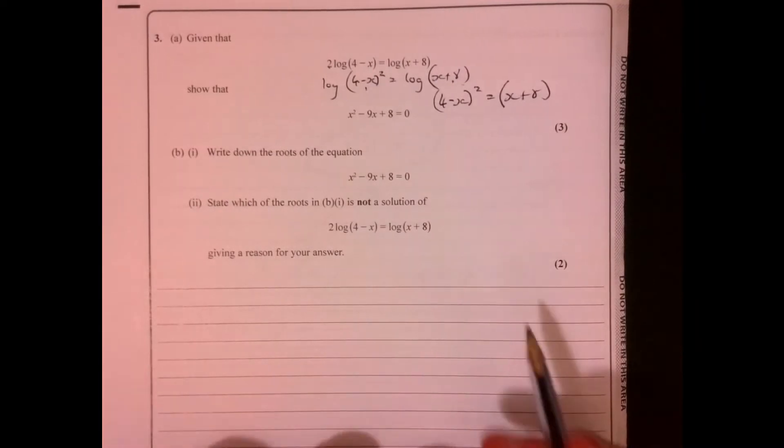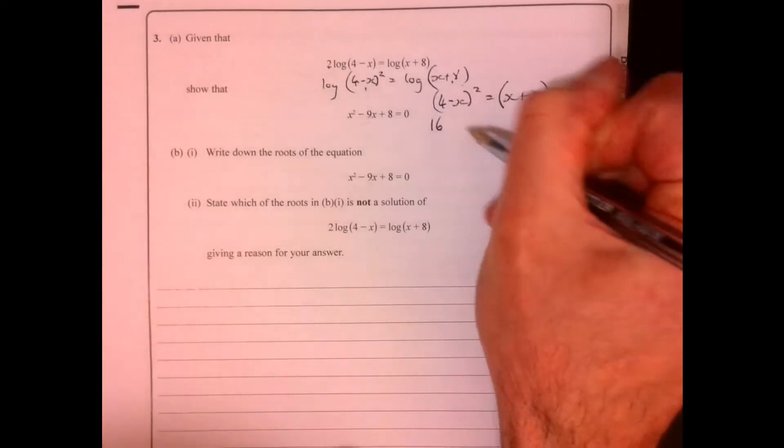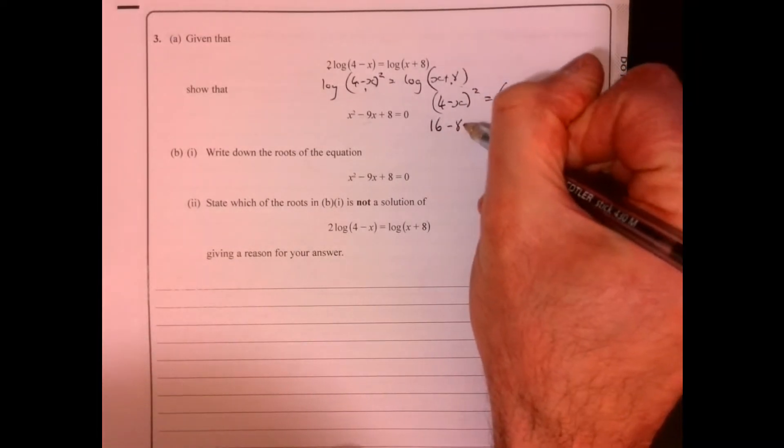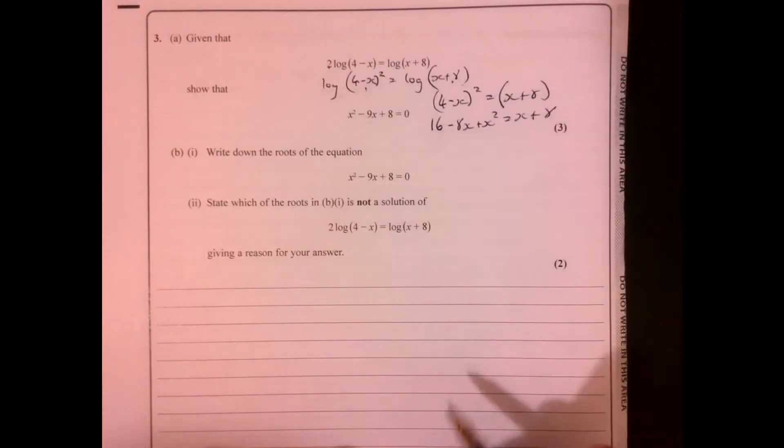And hopefully we end up getting this thing in. Let's have a quick double check. So that's going to give me 16, take away 8x plus x squared equals x plus 8.